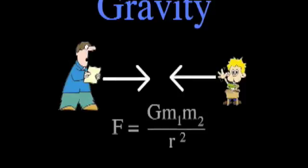That attraction can be calculated by using the equation force equals the gravitational constant, big G, times the mass of the first object times the mass of the second object, divided by the square of the distance between the centers of the two objects. You can't feel the attraction between you and your classmates because the force is very small, because your masses are very small.